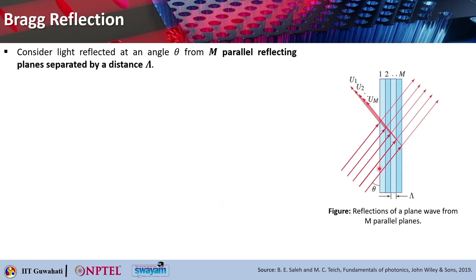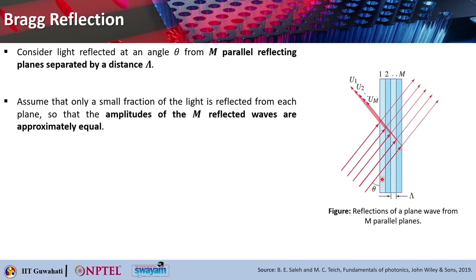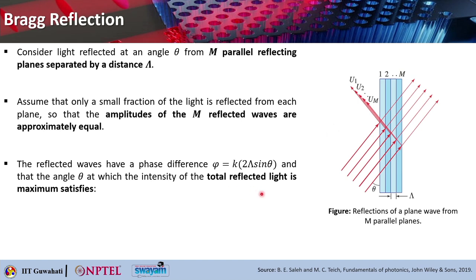Let us go into more detail of how exactly Bragg reflection takes place. Consider light reflected at an angle theta from m parallel reflecting planes which are separated by a distance of capital lambda. Here theta is measured from the plane of the reflecting planes. We assume that only a small fraction of the light is reflected from each plane, and the amplitudes of the m reflected waves are approximately equal. The reflected waves will have a phase difference of phi, which is basically k times 2 lambda times sin theta.